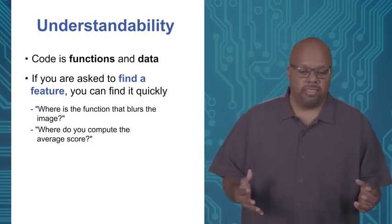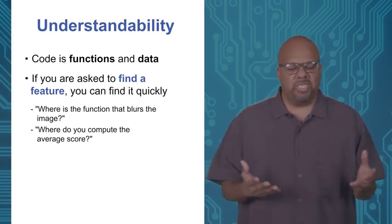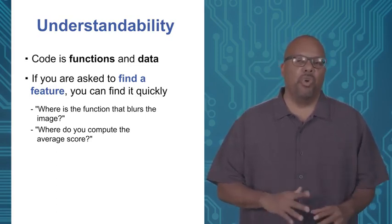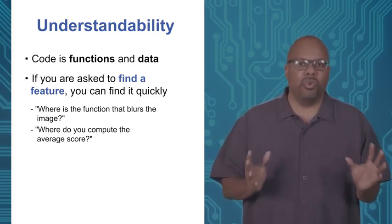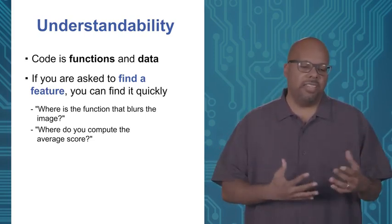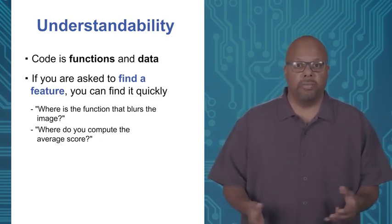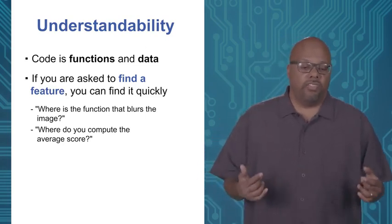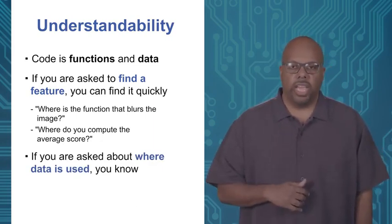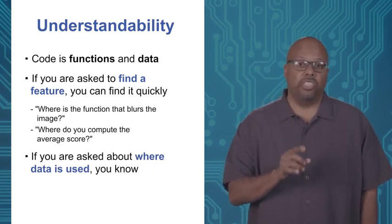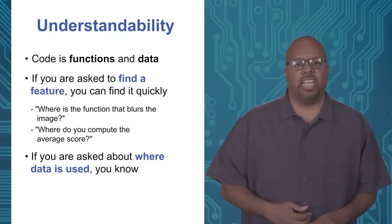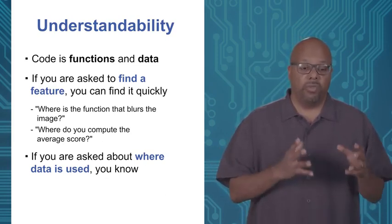Another aspect of understandability is finding where data is used and where it's defined. Often you'll get a problem where some data is incorrect, and you need to know what part of your code affected that data. You want to be able to trace through data: where is it used, where is it defined? Where did you modify the record list? Where did you access the file? You need to be able to find these things quickly.